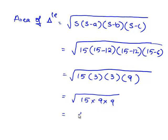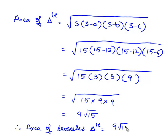And we are left with 9 times square root of 15. Therefore area of the isosceles triangle is equal to 9 root 15 centimeters square.